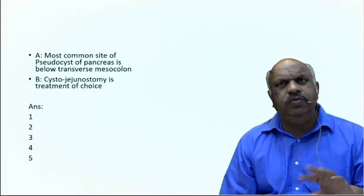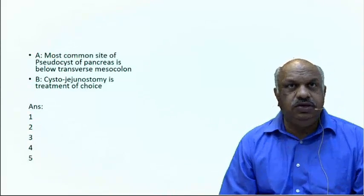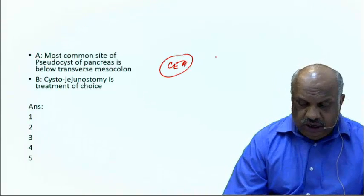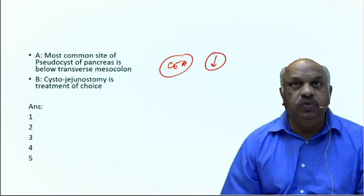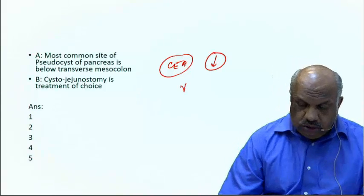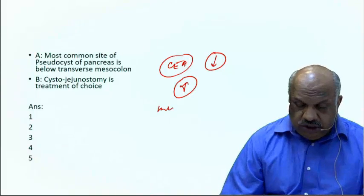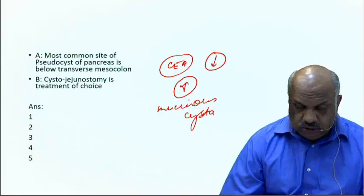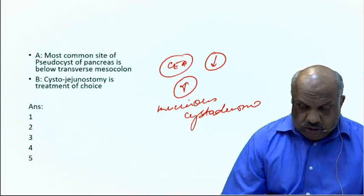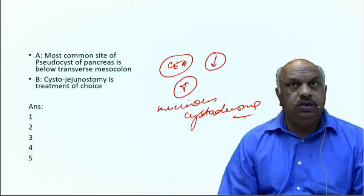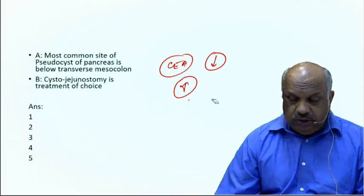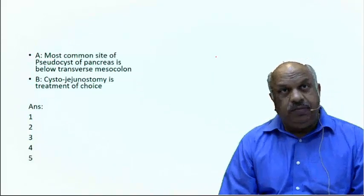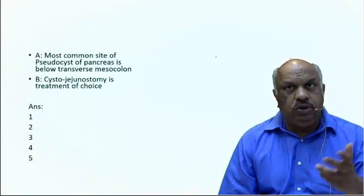Surgery is normally done around 8 to 12 weeks but never within six weeks. Remember, CEA should be less than 250; if it is more, think of mucinous cyst adenoma rather than pseudocyst. When operating, aspirate the fluid, send it for CEA estimation, and take a biopsy, as mucinous cyst adenoma can present the same way.